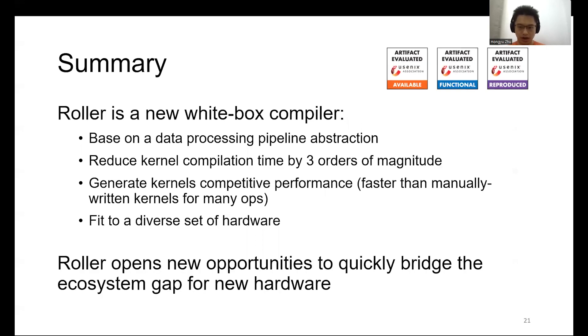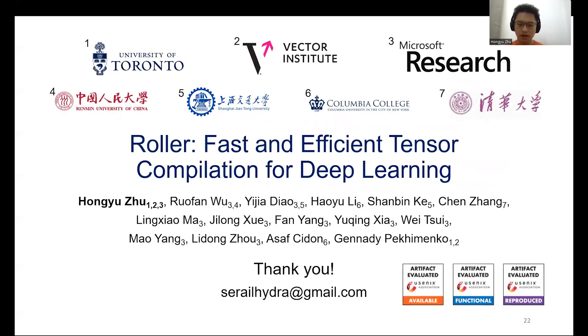In summary, Roller is a new tensor compiler that is based on data processing pipeline abstraction. It significantly reduces the compilation time of AutoTensor compilers from hours to only seconds, and it is able to produce kernel programs with high quality. It can also fit to a diverse set of hardware. Most importantly, we believe that Roller has the potential to open new opportunities to quickly bridge the ecosystem gap for newly emerged hardware.